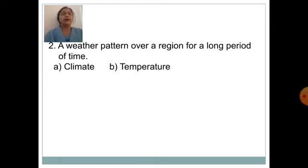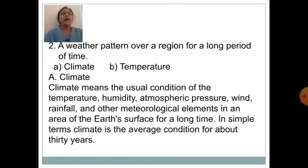A weather pattern over a region for a long period of time is known as — option A: climate, option B: temperature. Answer is option A: climate. Climate means the usual condition of the temperature, humidity, atmospheric pressure, wind, rainfall and other meteorological elements in an area of earth's surface for a long time. In simple terms, climate is the average condition for about 30 years.